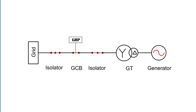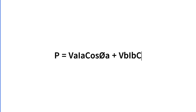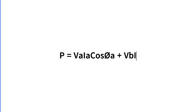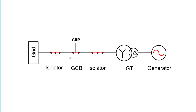The reverse power element in a numerical relay calculates the three-phase active power using the formula P = VAIA cos φA + VBIB cos φB + VCIC cos φC. The relay considers forward current as the current flowing from the generator to the grid, which corresponds to positive active power. When the generator operates in motoring mode, active power flows in the reverse direction, and if the reverse active power exceeds the set value for a specified time delay, the relay operates to trip the breaker, protecting the generator and turbine from damage.